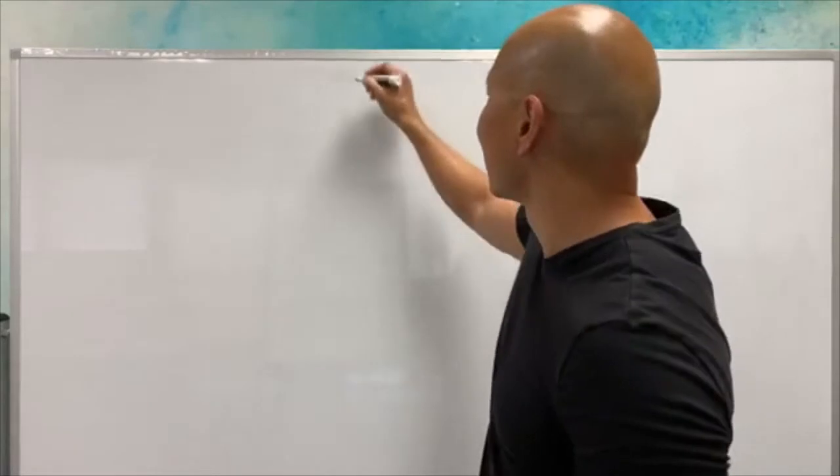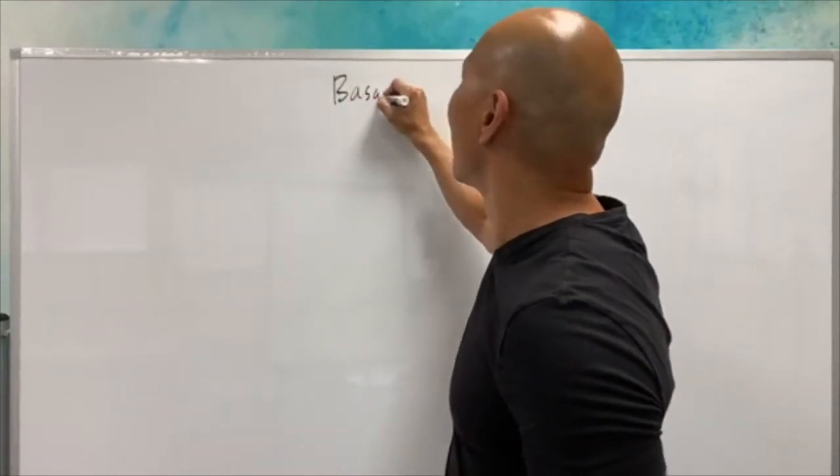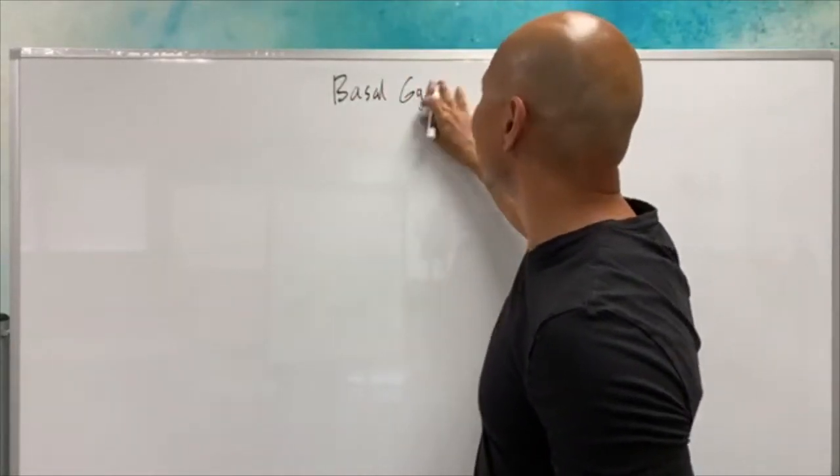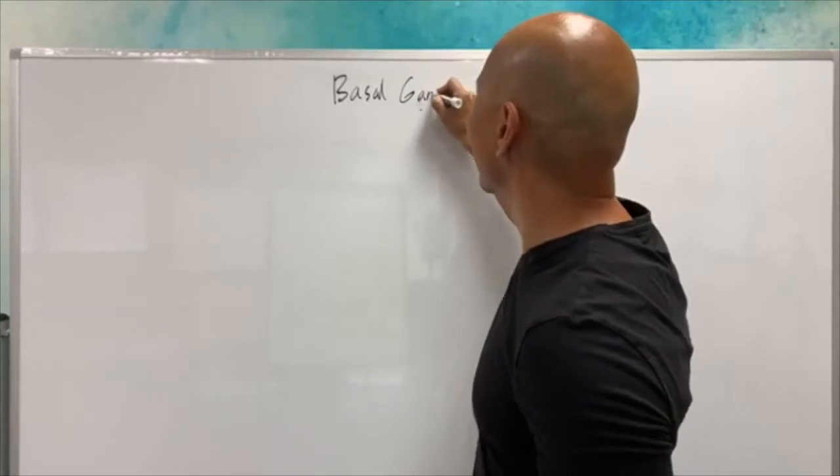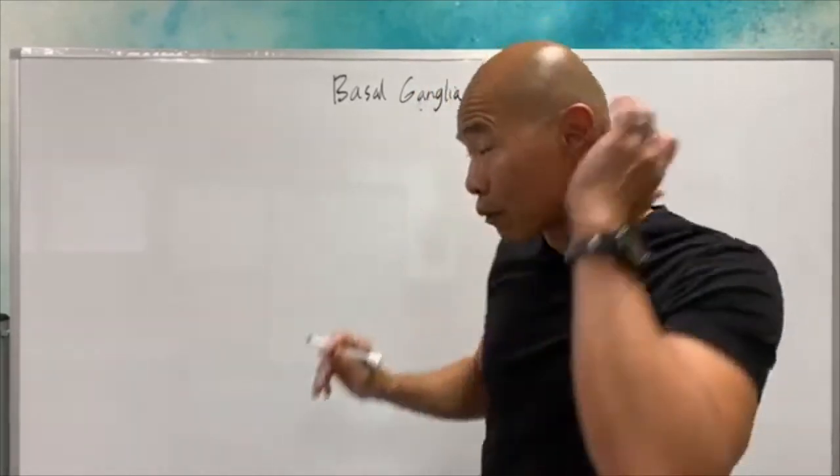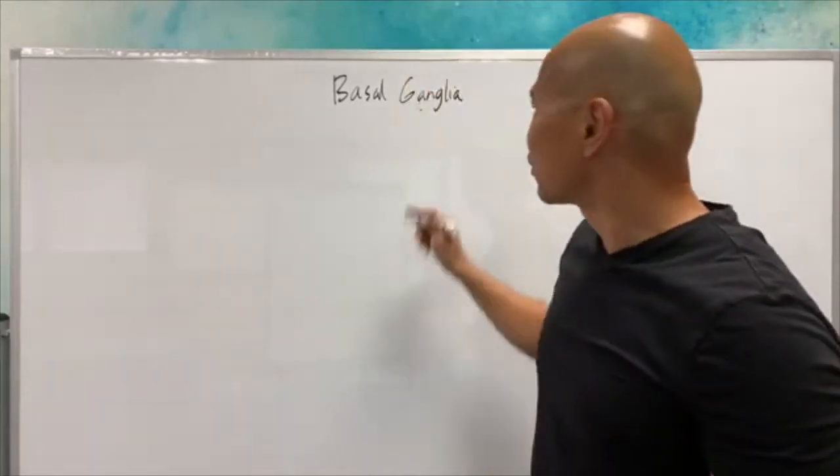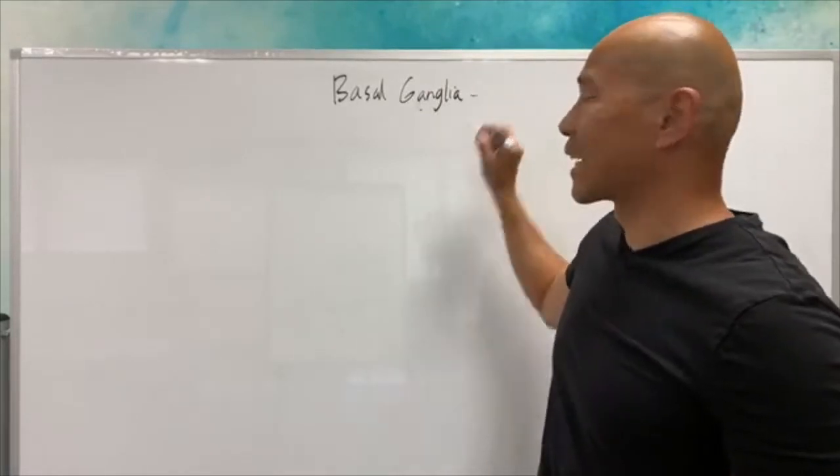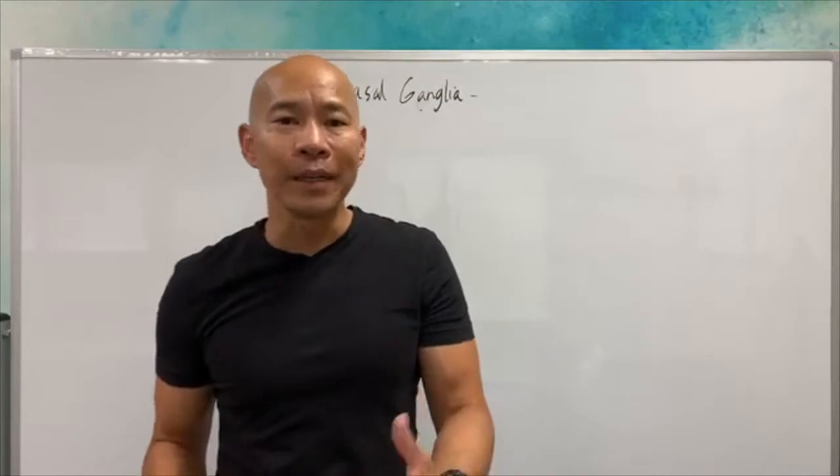Today we're going to talk about the last one and this is basal ganglia. Basal ganglia is a collection of neurons in the middle part of your brain and this part of brain controls, it's like a gating mechanism. It controls your thoughts, your movement, your emotion, it's part of the limbic system.